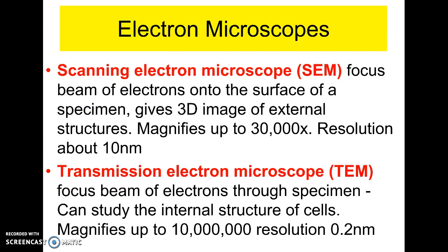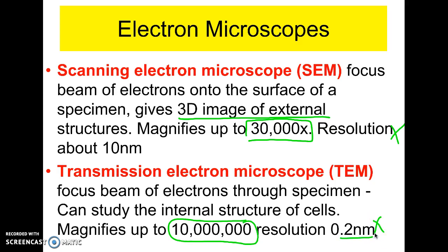Electron microscopes magnify a lot more. The scanning electron microscope magnifies up to 30,000 times and gives you a three-dimensional image. It has better resolving power — you can see between things that are just 10 nanometers apart. Transmission electron microscopes can magnify up to 10 million times, with a resolution of 0.2 nanometers. This is because beams of electrons do not scatter the way that light does, so you get better resolving power and can magnify much more without it getting blurry.